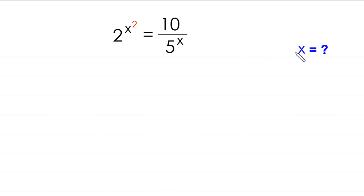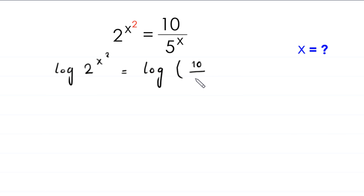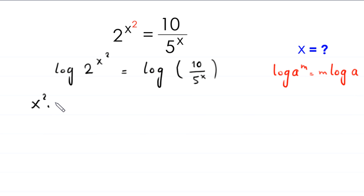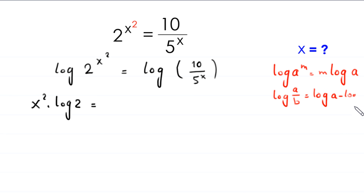Let's start. First we take the log of both sides. Log of 2 to the power x squared is equal to log of 10 divided by 5 to the power x. By using the log property that log of a to the power m equals m times log of a, the left side becomes x squared times log of 2. Using the property log of a over b equals log a minus log b, the right side becomes log of 10 minus log of 5 to the power x.